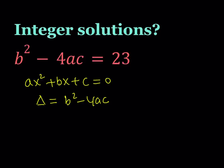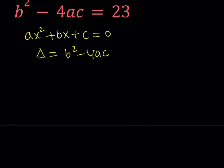So we're going to try to answer that question, and then at the end we're going to know if such quadratic equations exist. Let's go ahead and rewrite this equation: b squared minus 4ac equals 23.